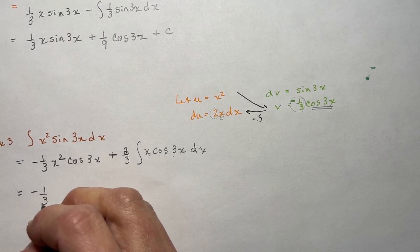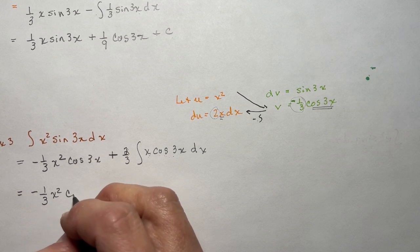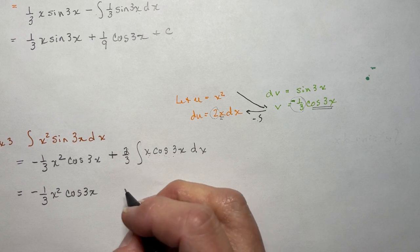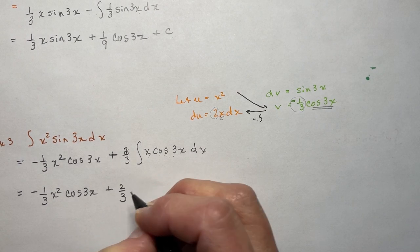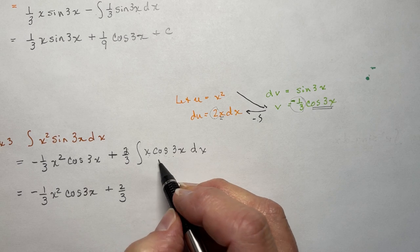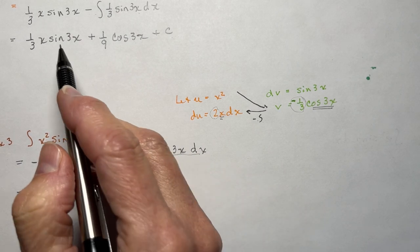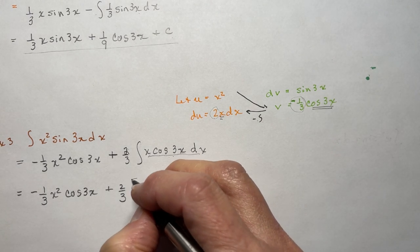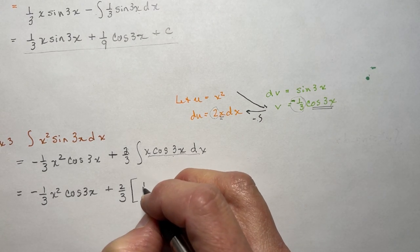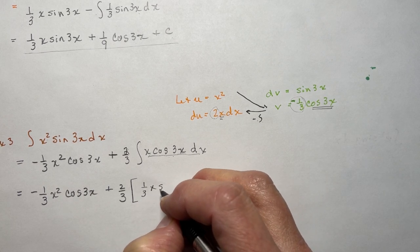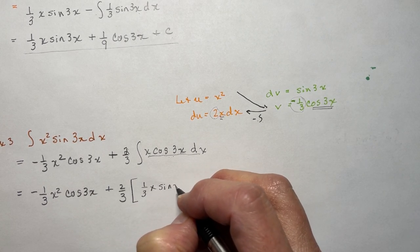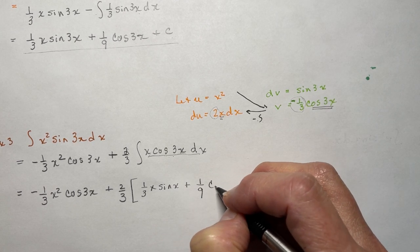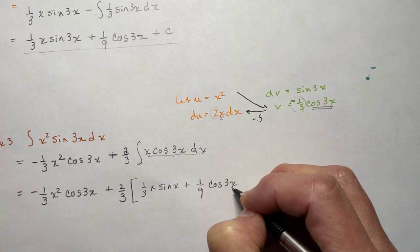But the good news is that we already did this in the question above. So we don't have to redo all the u and v setup. I'm just going to write (2/3), and I know that the integral of x·cos(3x) is all of this — (1/3)x·sin(3x) minus (1/9)cos(3x) plus c.